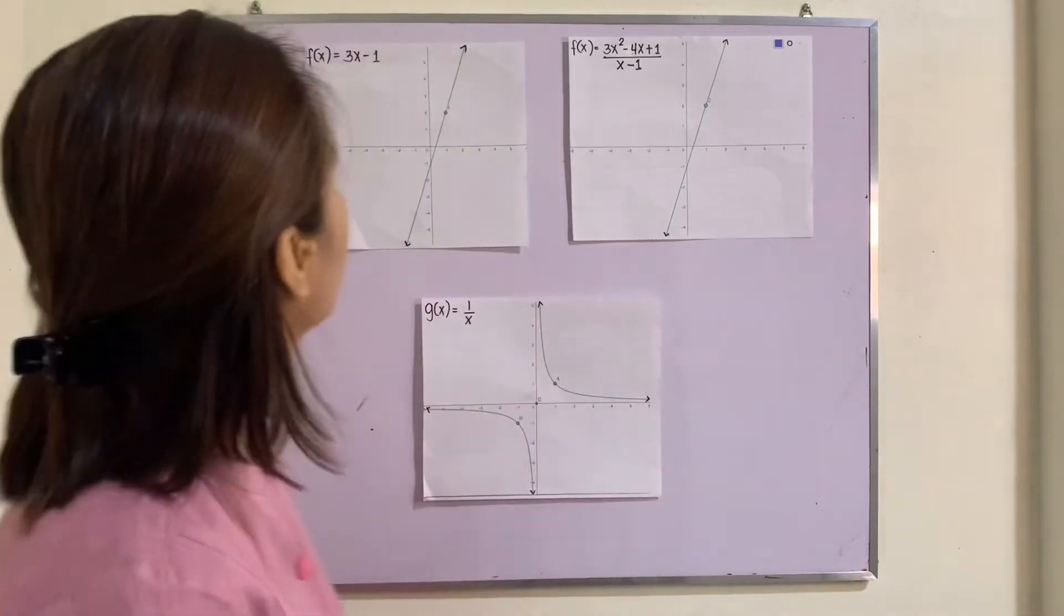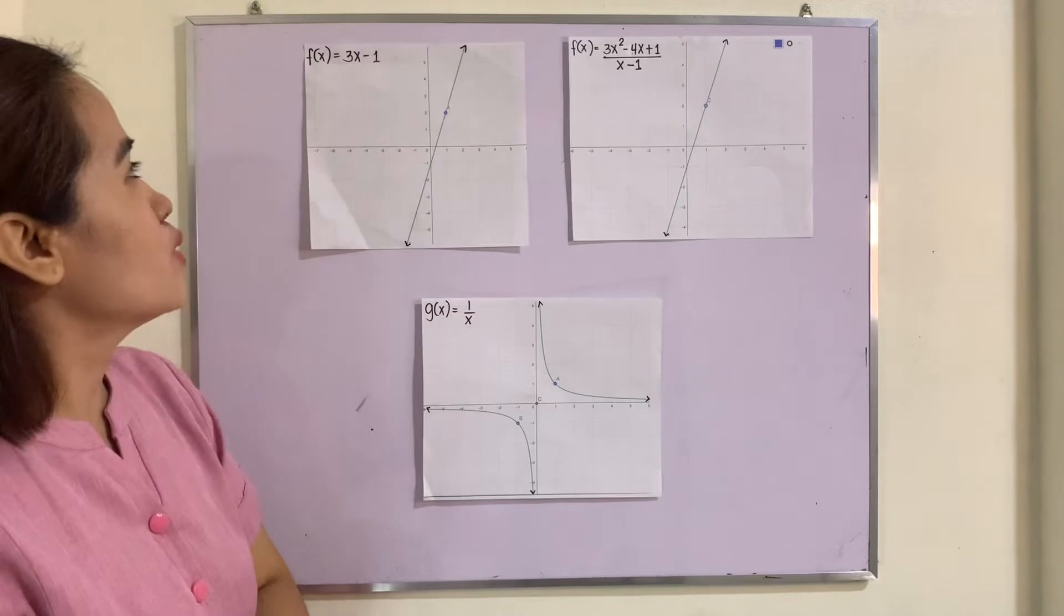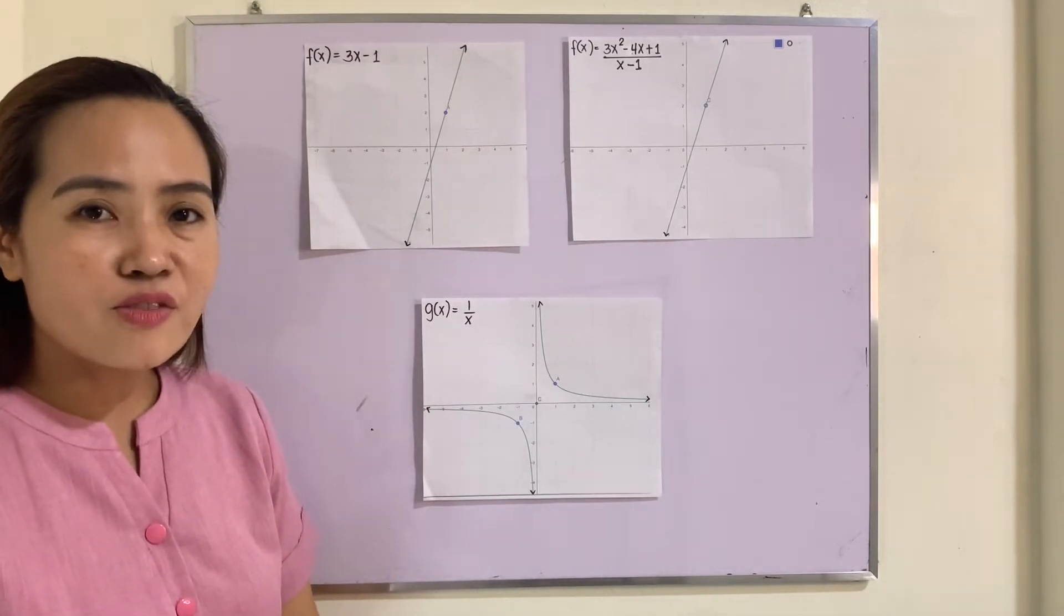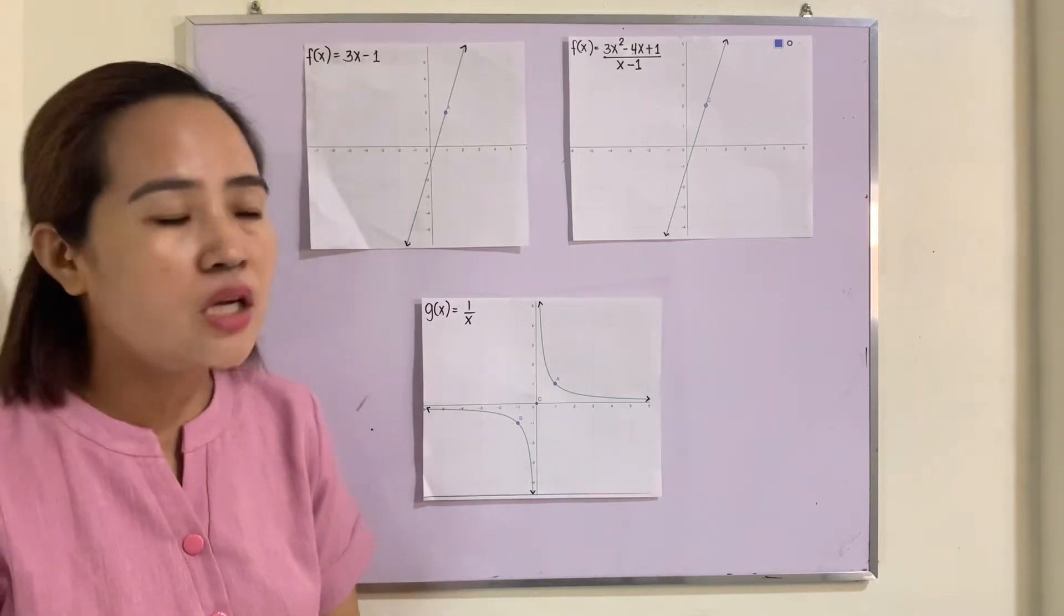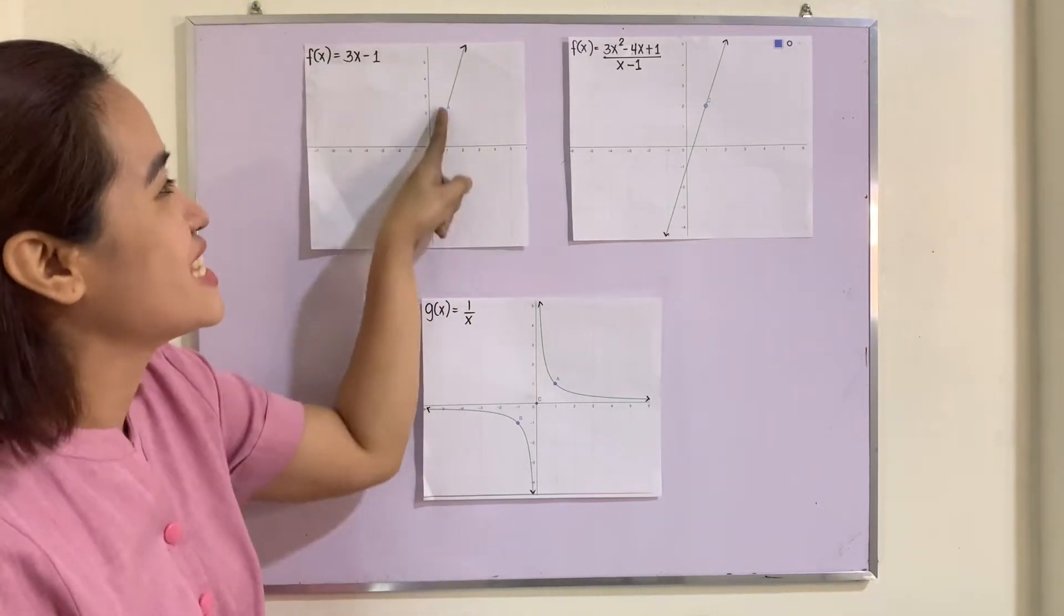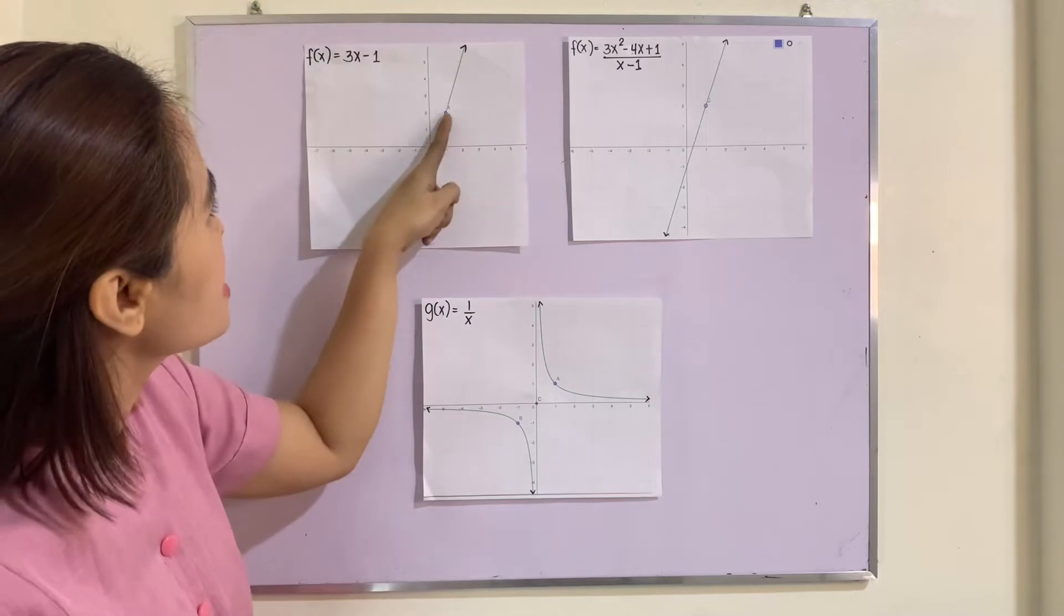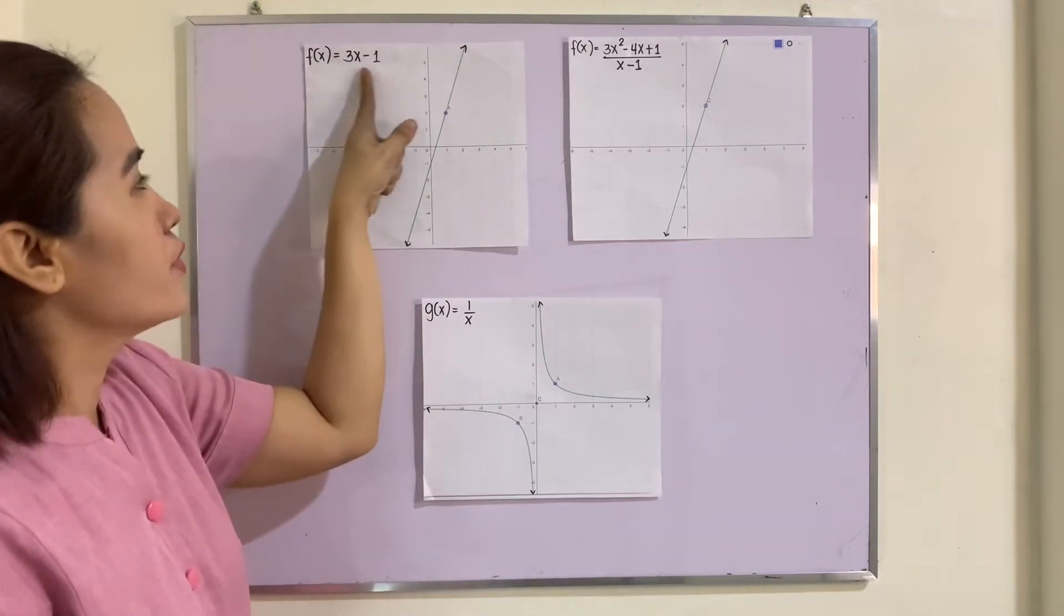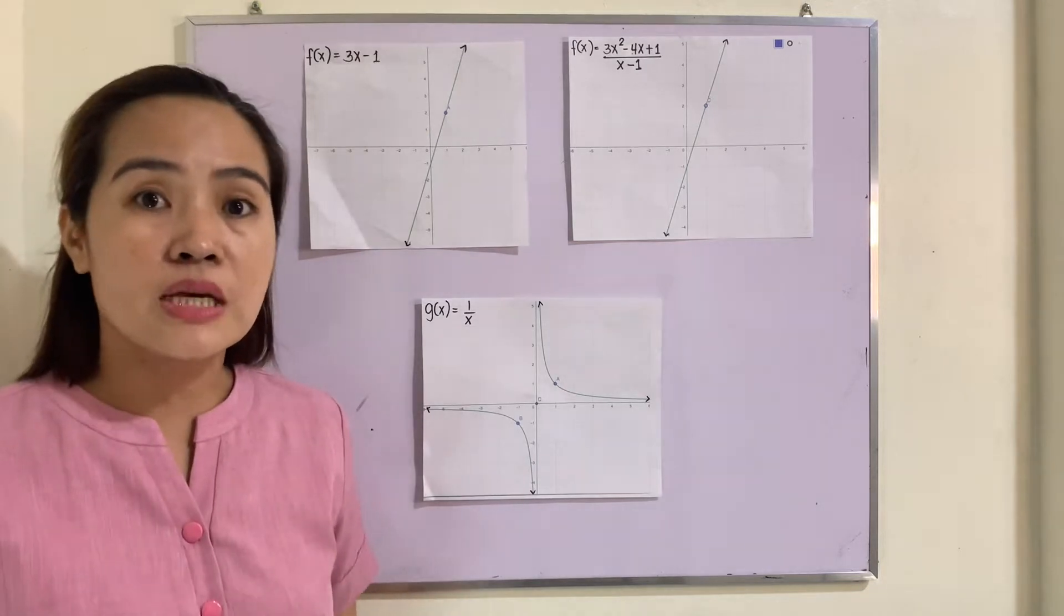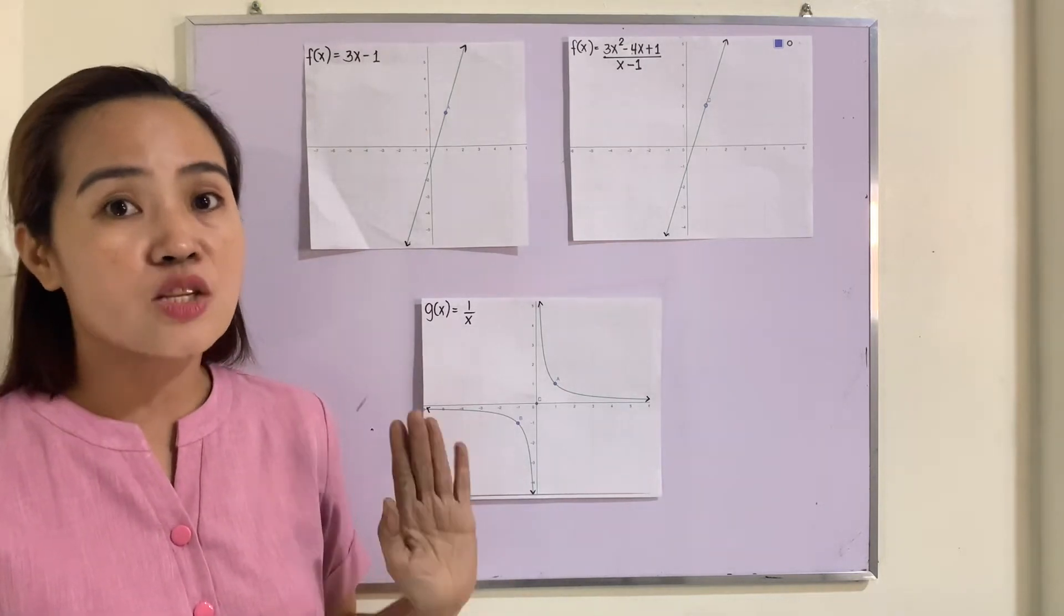Let's see. f(x) = 3x - 1, that is the given function. Now we will determine whether this function is continuous at x = 1. This is x = 1. If we graph this one, you know already how to graph. You just assign values for x and then solve for y.